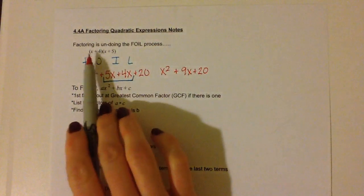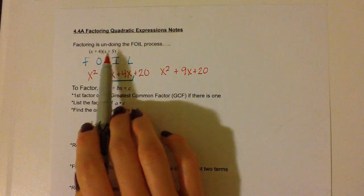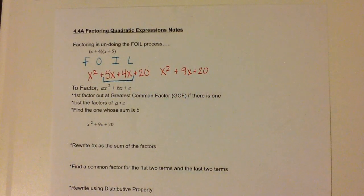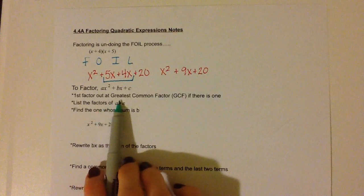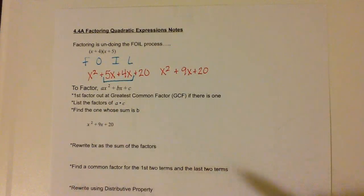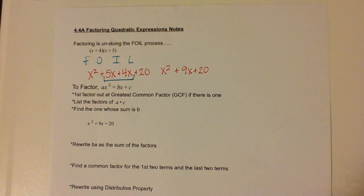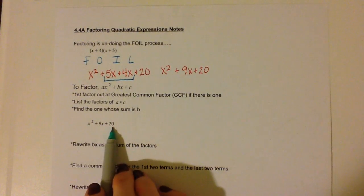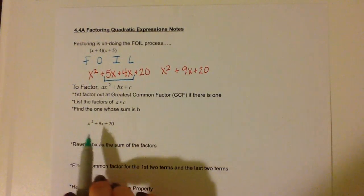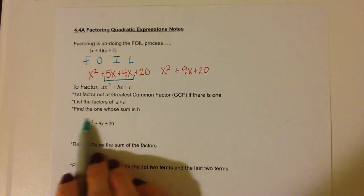So if we were to FOIL this, that is what we would get. So if we are going to factor ax squared plus bx plus c, the first thing we are going to do is factor out the greatest common factor, if there is one. So looking at x squared plus 9x plus 20, is there a greatest common factor in this expression?